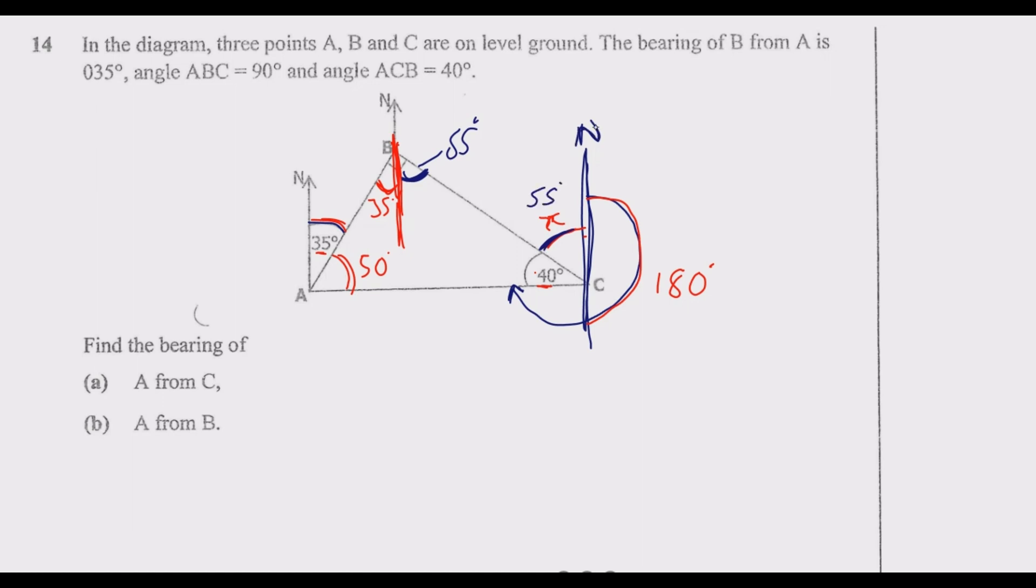So the bearing of A from C gives us now 360 degrees, which is the entire circle. Then to find this, we need to take out 40, 50, and 55. So when we subtract that, we're going to end up with 265 because this is 95. So it will be 360 minus 95, which gives us 265. So the bearing of A from C is 265 degrees.